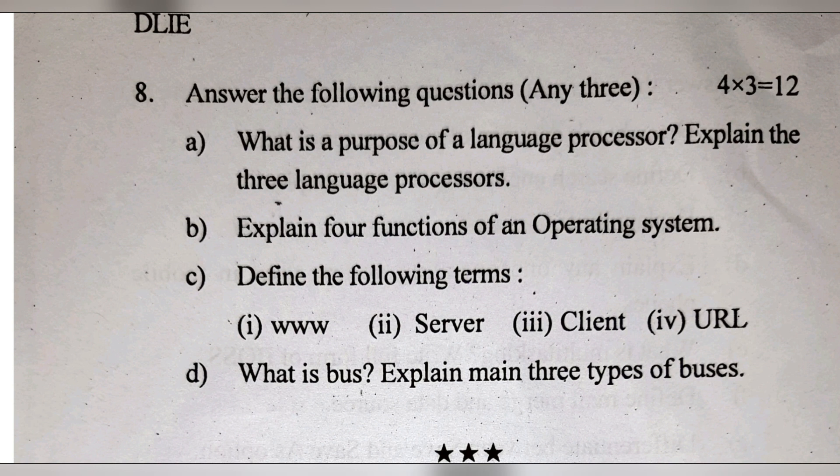Explain four functions of an operating system - memory management, processor management, storage management. These options are there, so you can write that one. Define the following: WWW - it is a collection of web servers that are interconnected to each other on the internet.